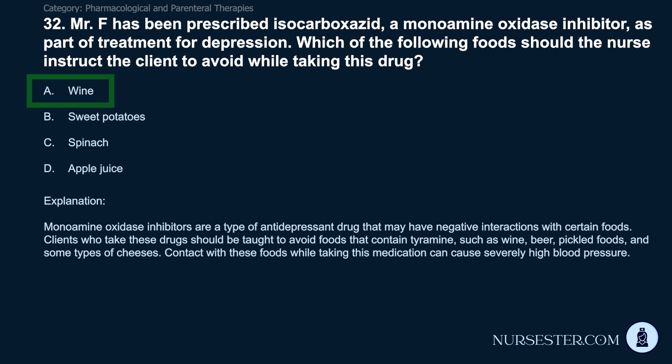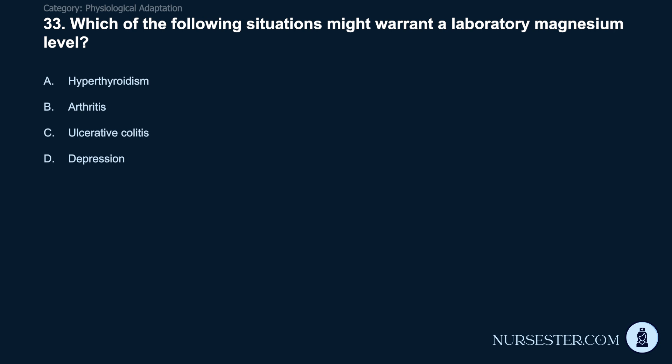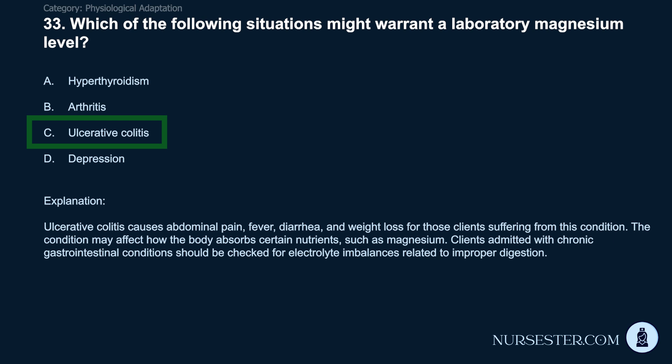Question 33: Which situation might warrant a laboratory magnesium level? A) Hyperthyroidism. B) Arthritis. C) Ulcerative colitis. D) Depression. Correct answer: C. Ulcerative colitis. Ulcerative colitis causes abdominal pain, fever, diarrhea, and weight loss, and may affect how the body absorbs nutrients such as magnesium. Clients admitted with chronic gastrointestinal conditions should be checked for electrolyte imbalances related to improper digestion.